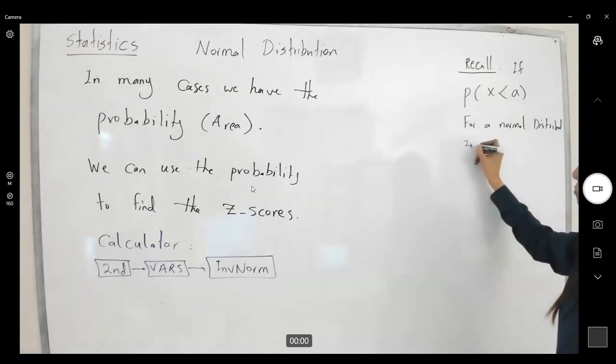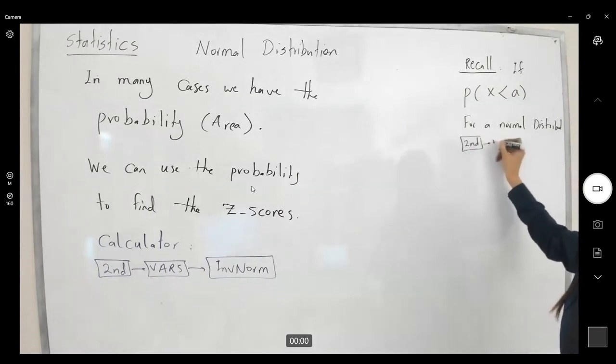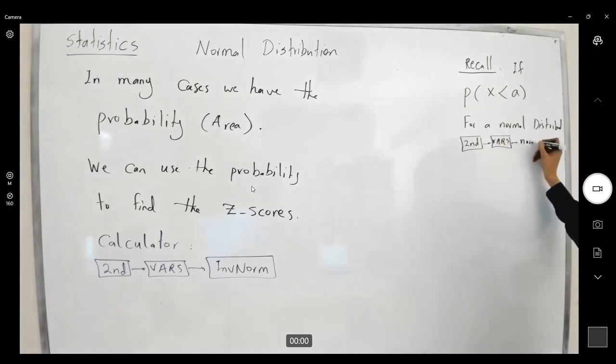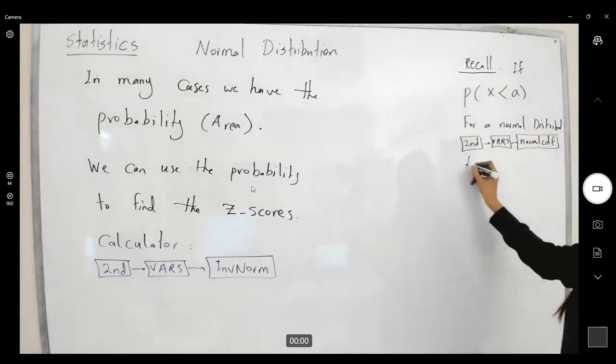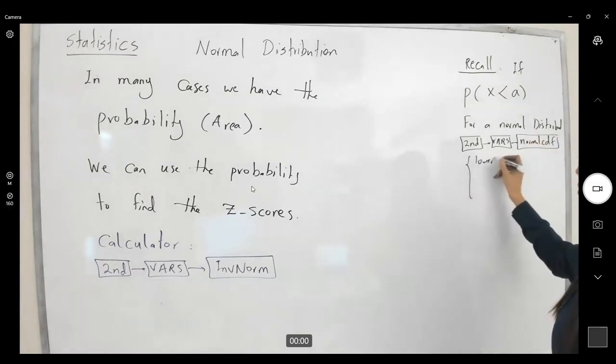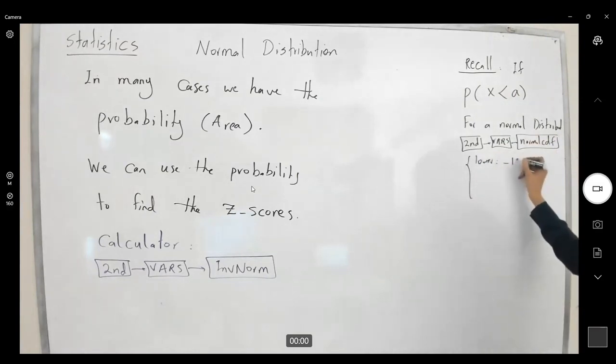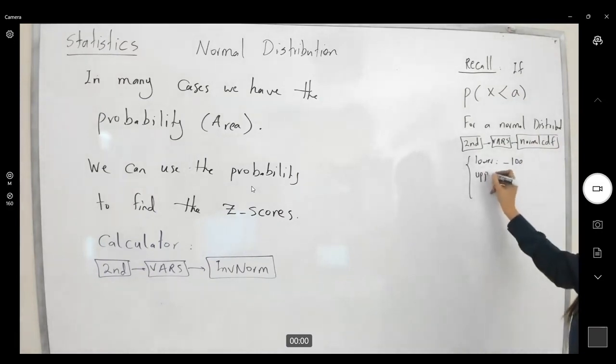you're going to go to second, you're going to go to vars, and you're going to use normal CDF. Then you have your lower limit, which is like negative 10, negative 100, a very small number. You're going to have your upper limit, which is A, the mean,